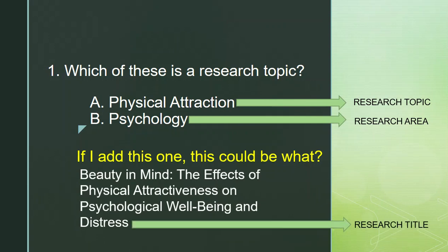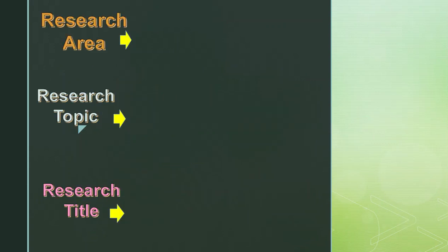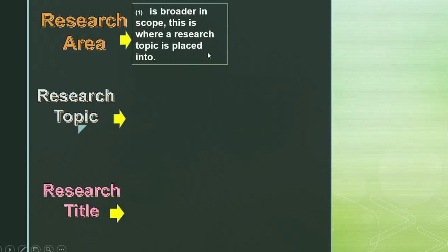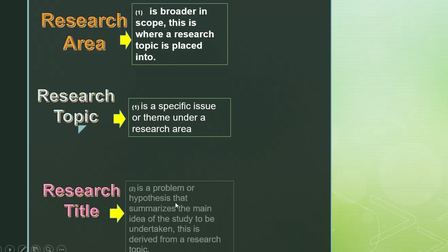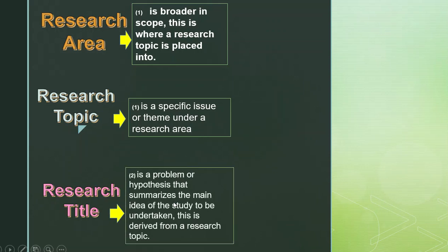Let us compare the three as to their definitions. Research area is broader in scope — this is where a research topic is placed into. Research topic is a specific issue or theme under a research area. And a research title is a problem or hypothesis that summarizes the main idea of the study to be undertaken, derived from a research topic.